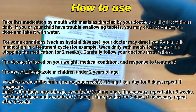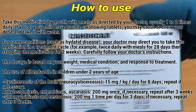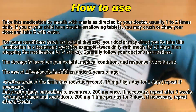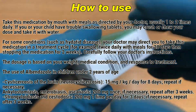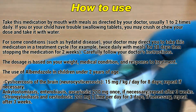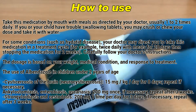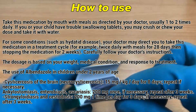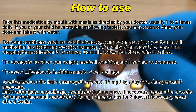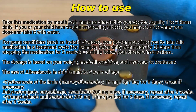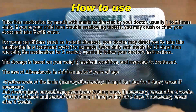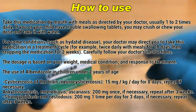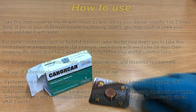For children under 2 years of age: Cysticercosis in the brain (neurocysticercosis) — 15 mg per kg per day for 8 days, repeat if necessary. Ancylostomiasis, enterobiasis, ascariasis — 200 mg once; if necessary, repeat after 3 weeks. Strongyloidiasis and giardiasis — 200 mg one time per day for 3 days; if necessary, repeat after 3 weeks.